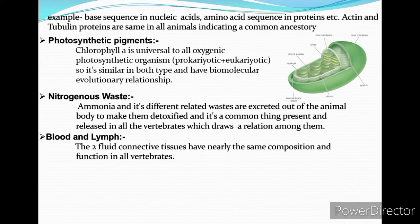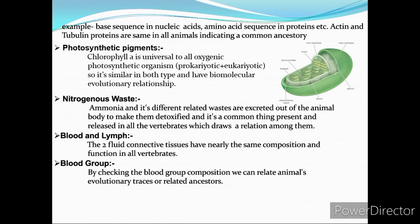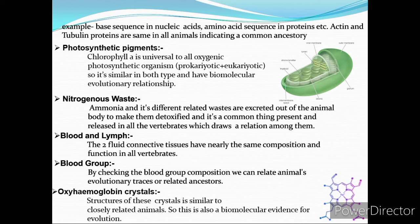Blood and lymph, the two fluid connective tissues, have nearly the same composition and function in all vertebrates. By checking blood group composition, we can relate any animal's evolutionary history or related ancestors. The crystal structures of oxymyoglobin are similar in closely related animals, which is also a biomolecular evidence for evolution. From the above points, we can prove the evidences of evolution from biomolecules.